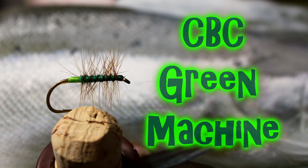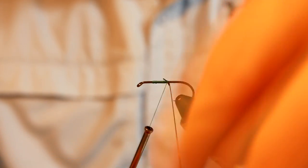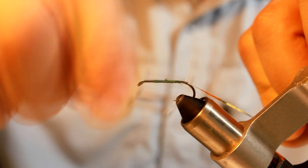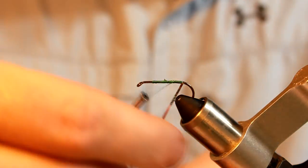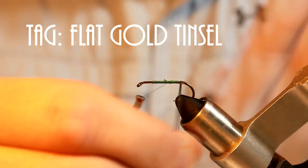Alright, this fly is called CBC Green Machine. It's a version of the original Green Machine but it's tied with green yarn instead of the spun deer hair that's trimmed.